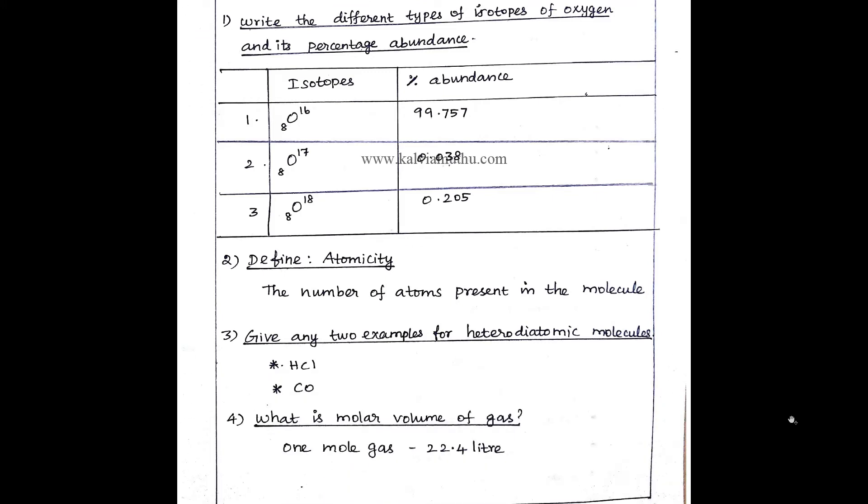Next question. Define atomicity. Atomicity is the number of atoms present in the molecule.